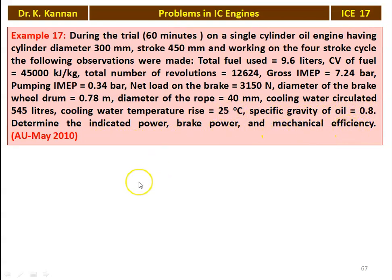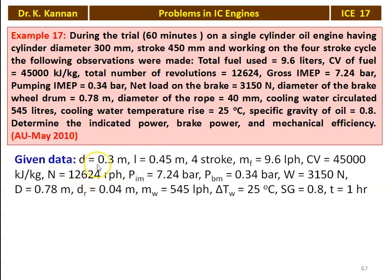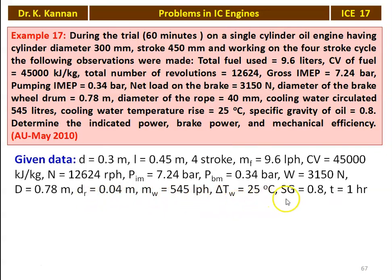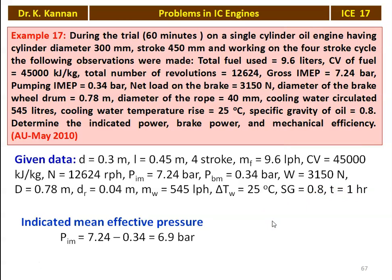Diameter of the brake drum 0.78 meter, diameter of the rope 40 millimeter, cooling water circulated 545 liters, cooling water temperature rise 25 degree Celsius, specific gravity of the oil 0.8. Determine indicated power, brake power, and mechanical efficiency. Given data: diameter 0.3 meter, stroke length 0.45 meter, 4-stroke cycle, mass of fuel 9.6 liters per hour, speed 12,624 revolutions per hour. We are given two mean effective pressures, gross IMEP 7.24 bar and pumping IMEP 0.34 bar, so the net IMEP = 7.24 − 0.34 = 6.9 bar.